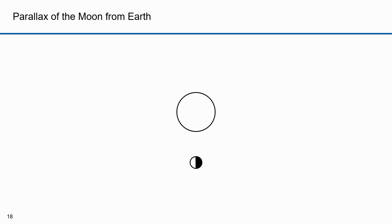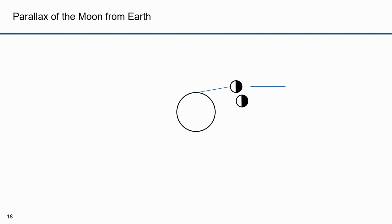Hipparchus also noticed that the moon had a noticeable parallax with respect to the earth — parallax being a change in apparent position from one perspective versus another. Here we have the moon orbiting the earth. Here is the moon below the horizon — we can't see it from here. Here's the moon on the horizon, and this is the distance from the moon when it's on the horizon. As the moon moves into orbit, the distance gets shorter, and when it's right above us at the zenith point, it's actually closest to us.